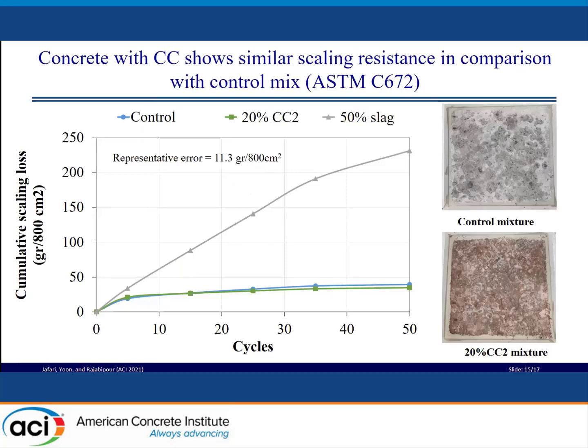The icing salt used for ice and snow melt on concrete causes physical damage on the surface of concrete during freeze-thaw cycles. The left figure shows cumulative scaling loss versus cycles, performed on the control and CC2 mixture, with a 50 percent slag mixture also tested for comparison. Both the control mixture and CC2 mixture performed similarly to each other, while the slag mixture had significant scaling problems. The surface of concrete slabs exposed to 50 cycles of freeze-thaw showed that both control and CC2 mixture are considered slight to moderate scaling.